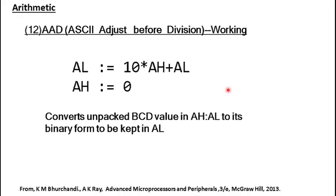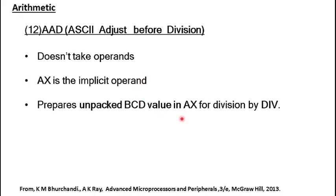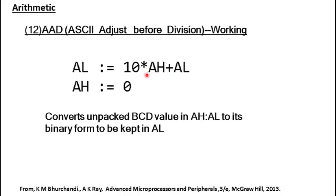As I told, our dividend will be spread across AX, that is in AH and AL, as two unpacked BCD digits. We need to combine them and give a single binary value as the dividend for the DIV instruction to work. What happens is, as it is spread in AH and AL, the AH value is taken and it is multiplied by 10, and the value in AL is added to that, and the final result is kept in AL, which happens to be the binary representation of the dividend which can be given to the DIV instruction.